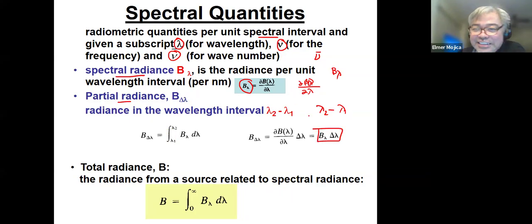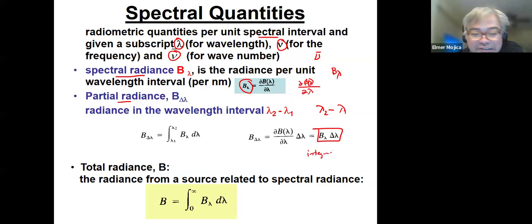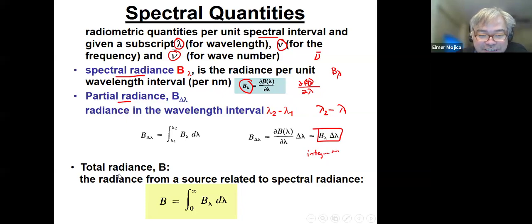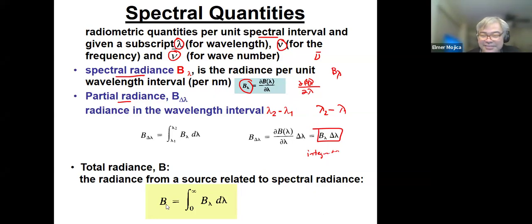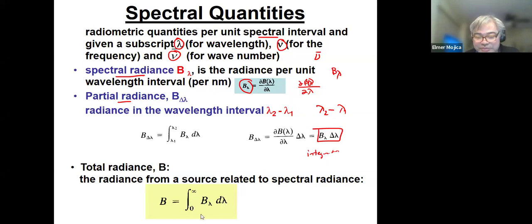Total radiance is just the radiance from a source related to spectral radiance — your radiance equals spectral radiance integrated over wavelength from zero to infinity.